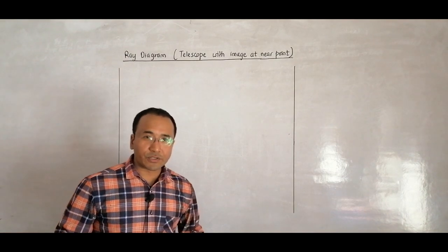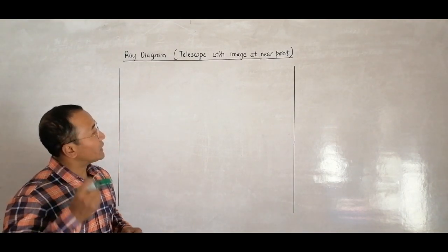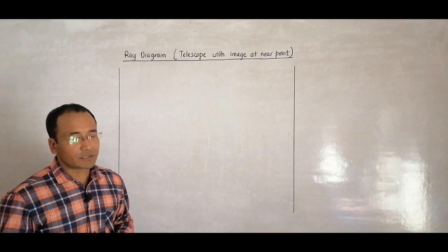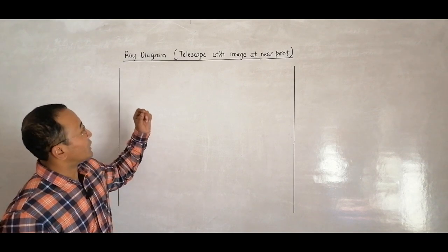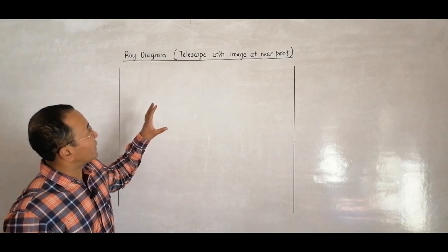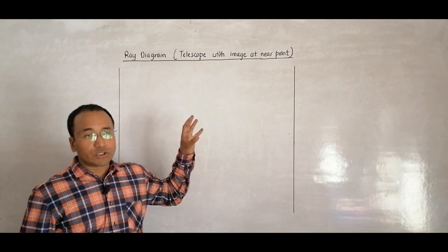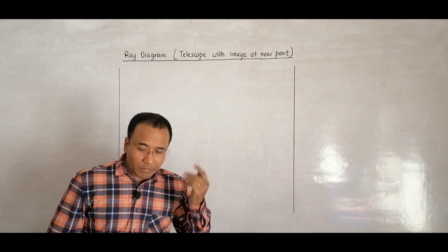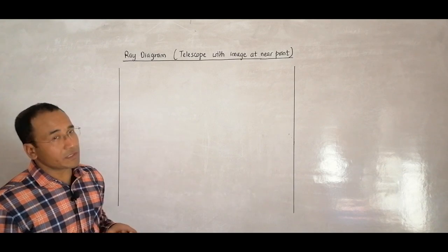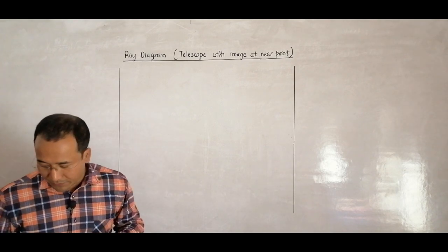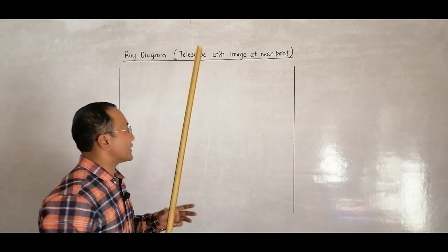Hello folks. This is a continuation of my previous lecture. In the previous lecture, I drew the ray diagram for a telescope with image at infinity. But now, I will be drawing the same thing but with image at near point. The technique is the same with slight modifications.